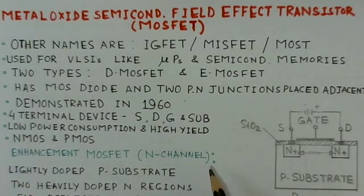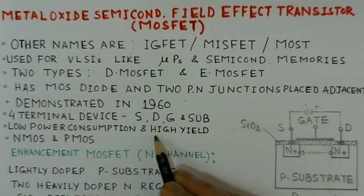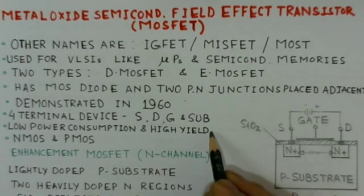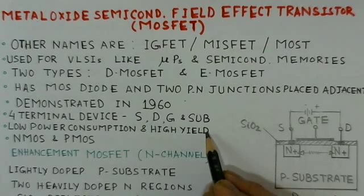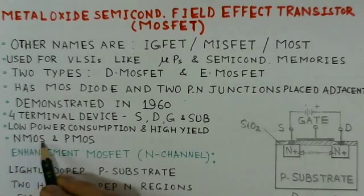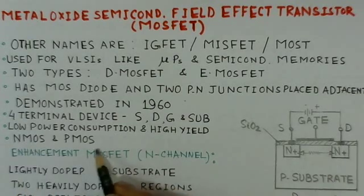This device has very low power consumption and a high yield of production. That means the yield of these devices when produced is high. There are two kinds of MOSFET circuits: one is the N-channel MOSFET and the other is the P-channel MOSFET.